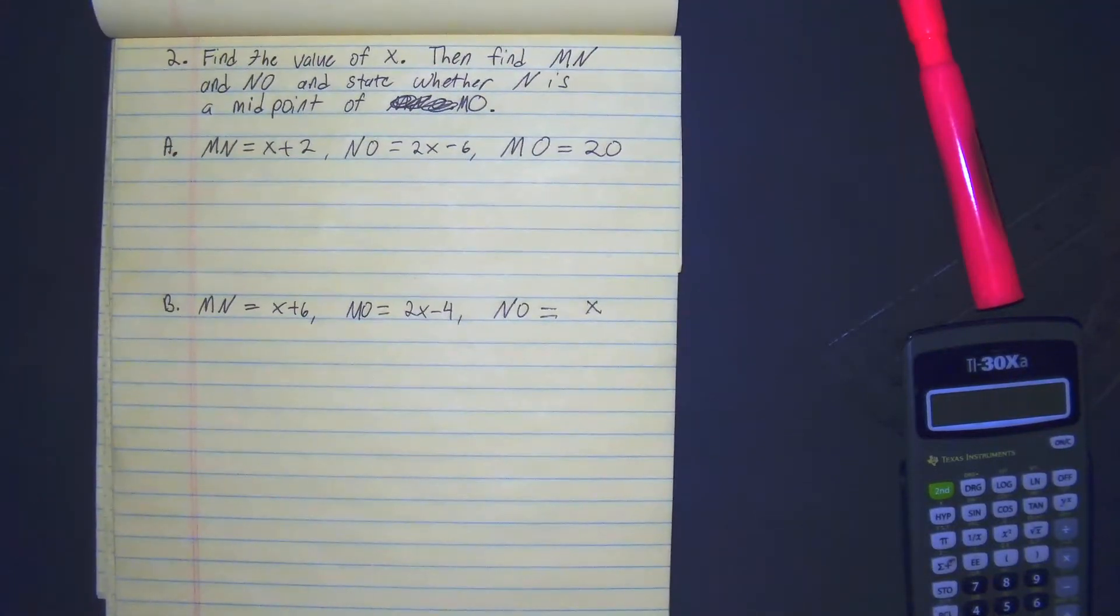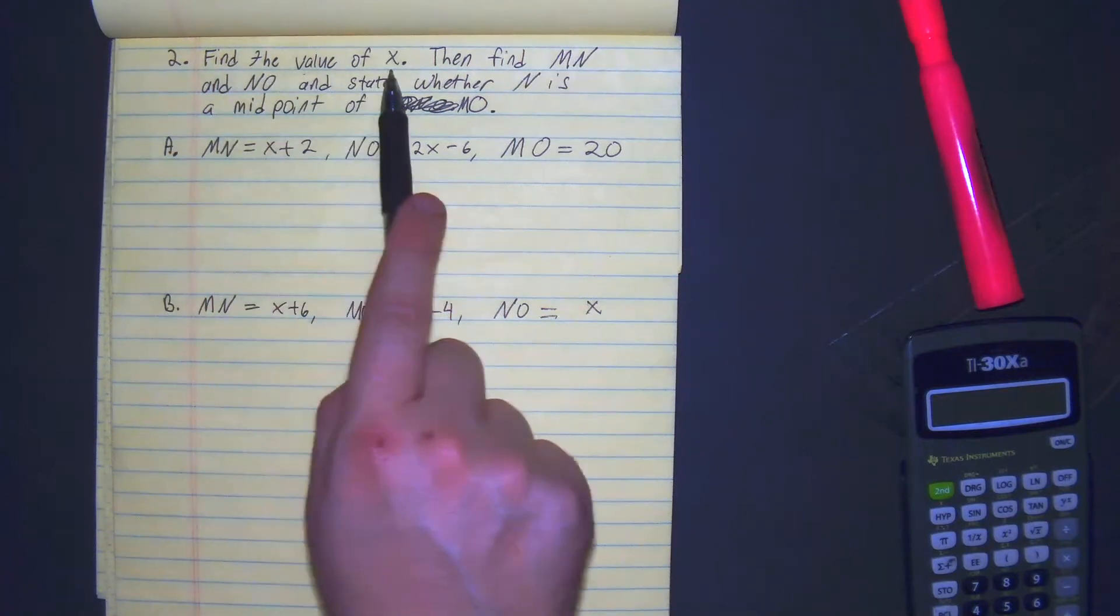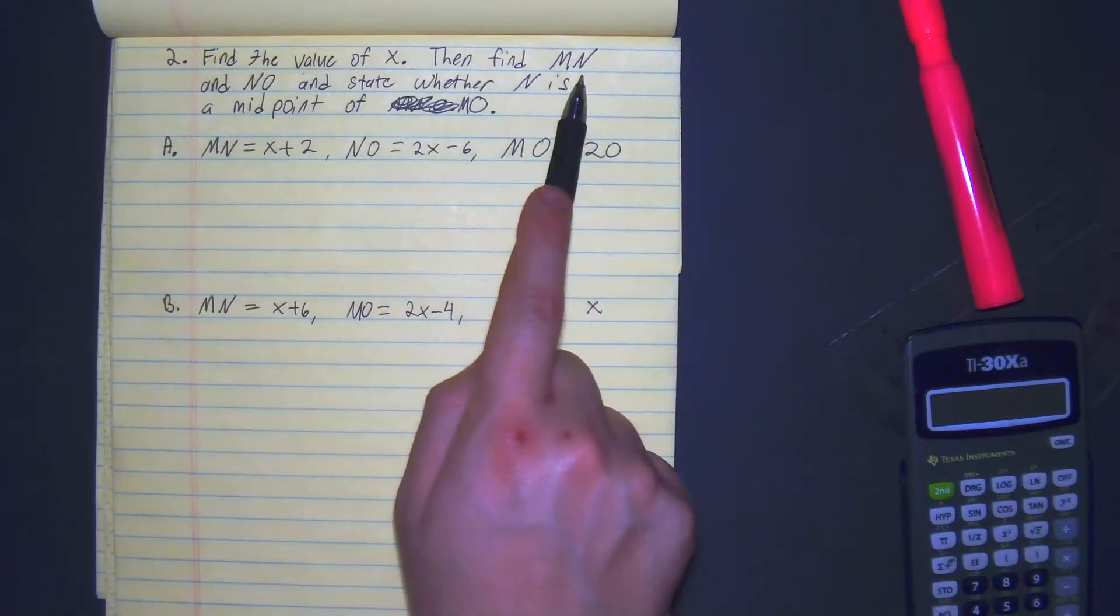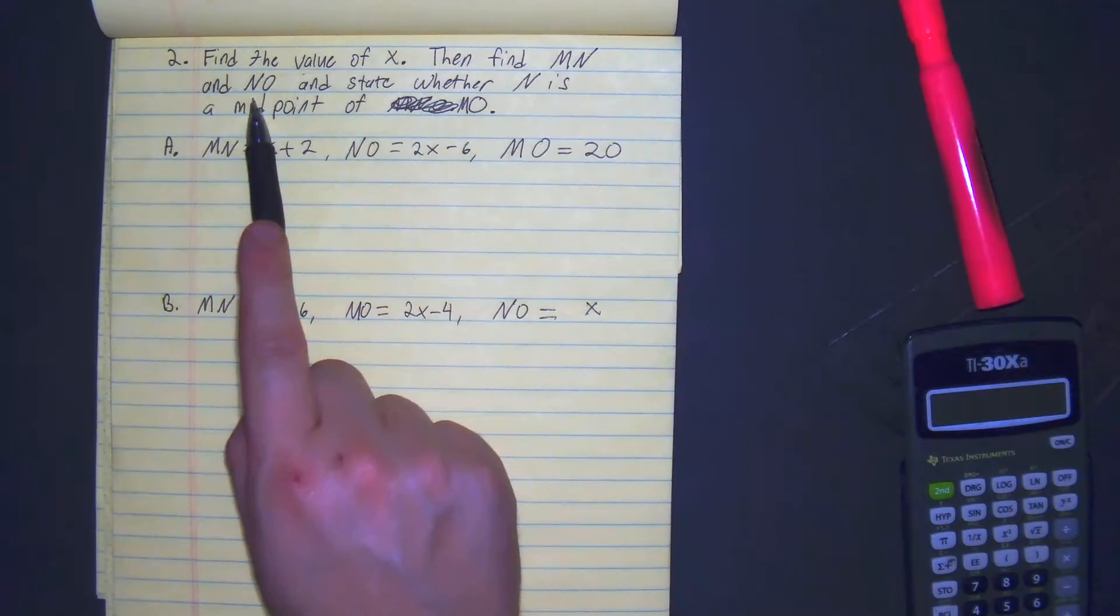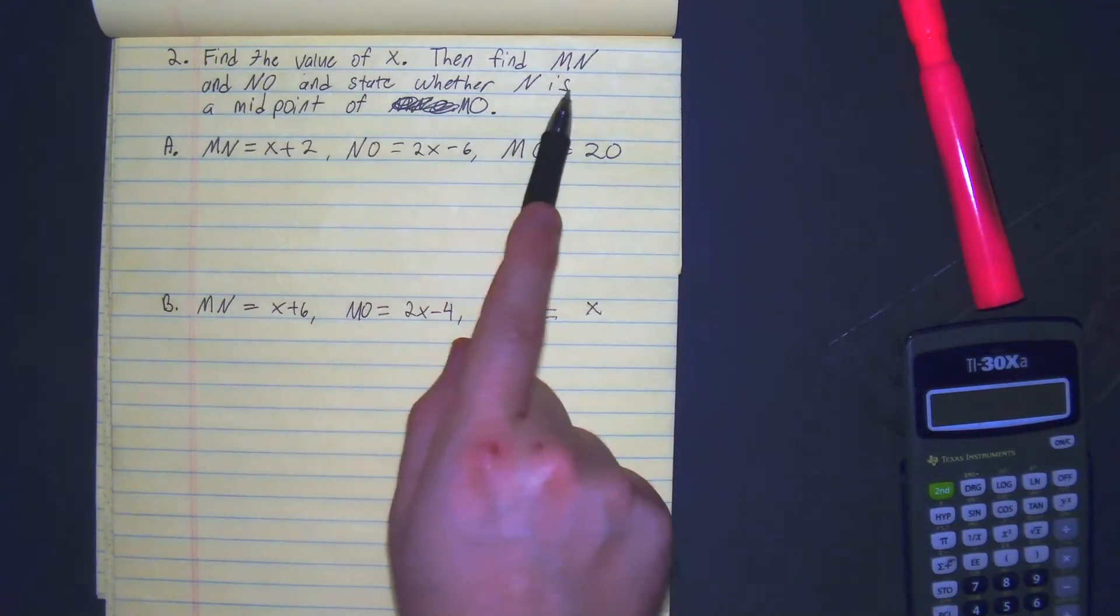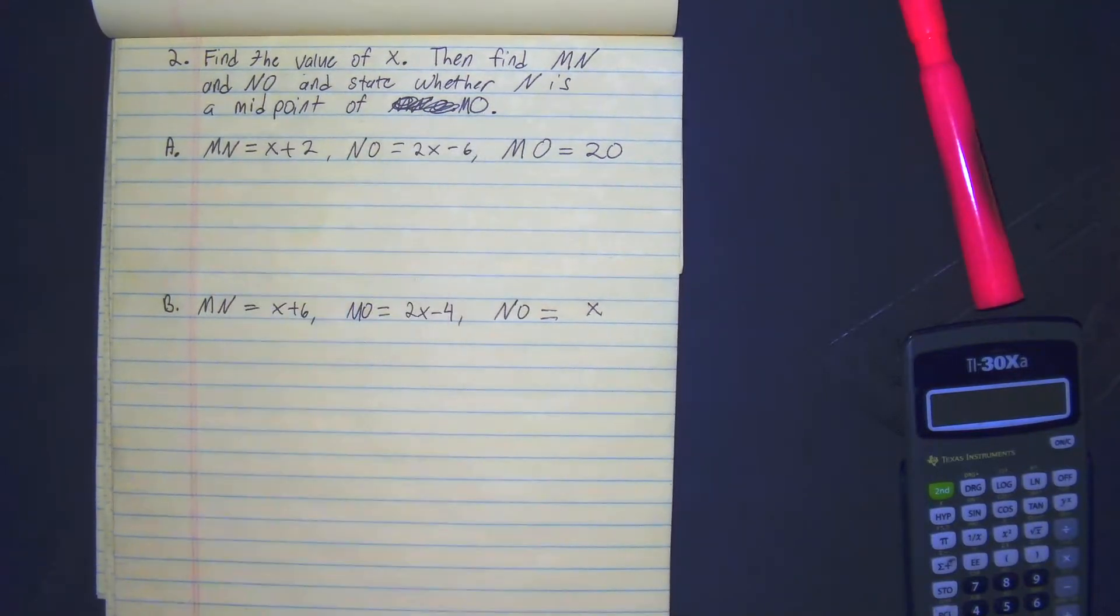Alright, we're continuing with our line segment midpoint. We're on the second one, part two. This says find the value of x, then find the line segments MN and NO, and state whether N is a midpoint of MO.